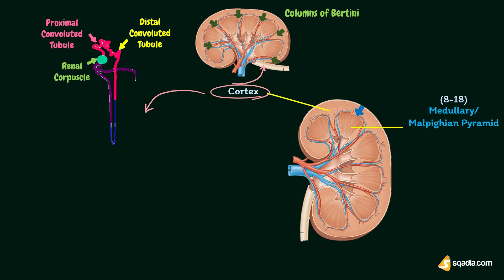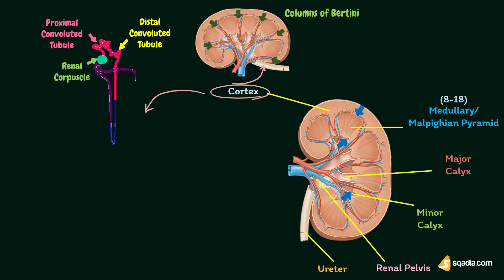This is ureter. This is renal pelvis. This is major calyx. This is renal artery. This is renal vein. This is renal sinus.